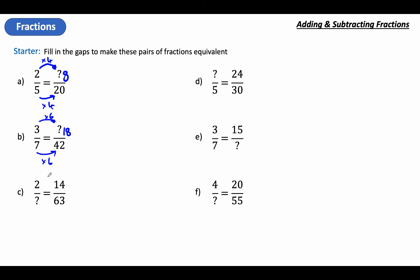Now this time we're going back the other way. I've actually got to think — instead of multiplying, what am I actually dividing by this time? How many twos go into fourteen? Seven, so it's been divided by seven. So we've got to divide it by seven. How many sevens in sixty-three? It's nine. So it should be two-ninths.